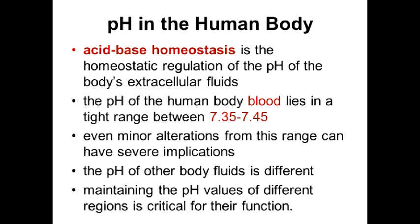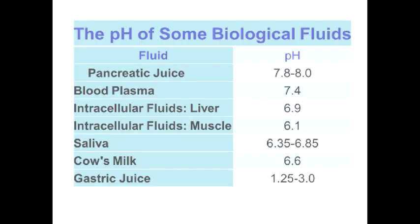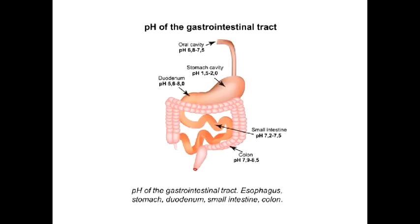Here are some examples of substances we know in everyday life and their pH values. For the human body, acid-base homeostasis requires all biological liquids to have a stable pH — this is especially important for blood, which has a pH range between 7.35 and 7.45. Other examples include the pH of different biological liquids and different parts of our gastrointestinal tract.